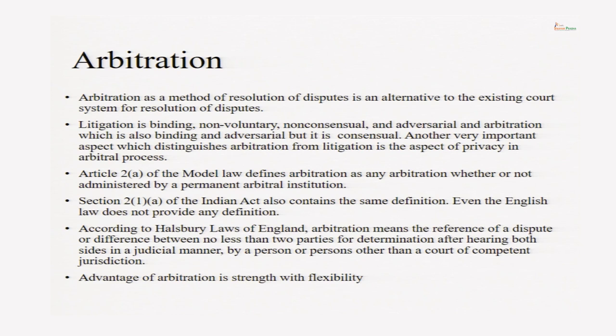What are the features similar to litigation? Litigation is binding — arbitration is also binding. Litigation is adversarial — arbitration is also adversarial, where parties are pitted against each other. Litigation is non-voluntary, but arbitration is voluntary. Litigation is non-consensual, but arbitration is consensual. On these aspects, arbitration is close to ADR. One significant point of difference between litigation and arbitration is the element of confidentiality or privacy, which we discussed in the first session — whatever happens in arbitration is done in private and will remain private. This is one feature that attracts disputants towards arbitration.